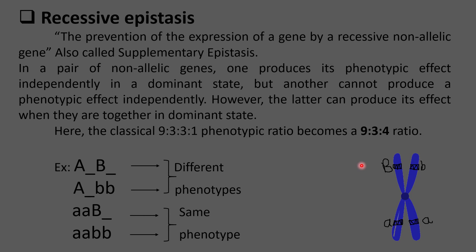This type of gene interaction is also called supplementary epistasis because this pair of non-allelic genes cannot produce its phenotypic effect independently — they need the support of the other pair of non-alleles. So the A alleles supplement the B genes to produce their own phenotypic effects.